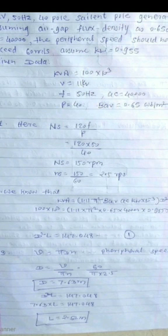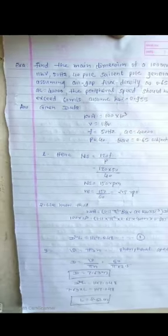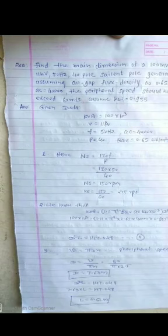In this fashion, we get the main dimensions, the diameter and length of the salient pole generator. It is a very simple problem. The pattern is similar for how we calculate. We are given different values, sometimes they give synchronous speed and not the number of poles.